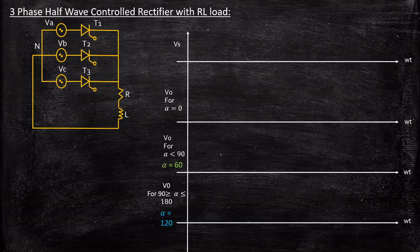We're going to consider the supply voltage waveform. We're going to consider the output voltage for alpha equal to zero, for alpha less than 90 degrees, and for alpha between 90 to 180 degrees. We're going to consider use cases of alpha equal to 60 and 120 degrees to understand the waveforms in a better way.